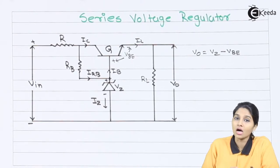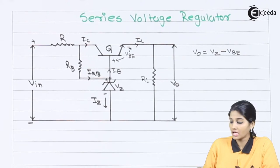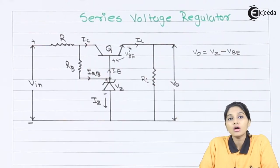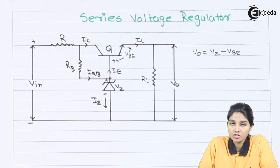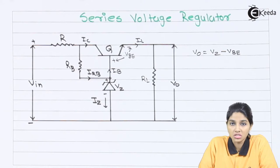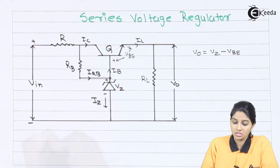The output voltage V0 is given as Vz minus Vbe. For understanding the operation of the series voltage regulator, we are going to consider two cases: the first case in which the output voltage increases, and the second case in which the output voltage decreases.